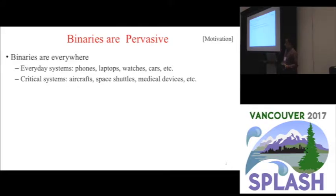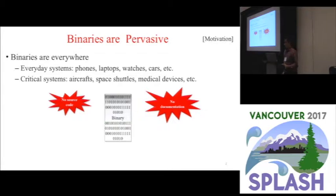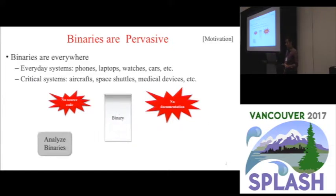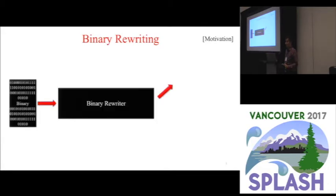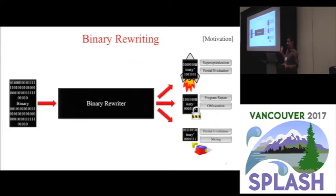The task of machine code synthesis falls in the broader category of binary analysis. Binaries are of course pervasive, and sometimes we lack source code for them and documentation. Our binaries might be legacy, or they might be untrusted, motivating the need for automated tools to analyze and potentially rewrite them. Why rewrite binaries? There are a lot of applications for a binary rewriter. We might rewrite binaries to optimize them either by super optimization or partial evaluation. If we have interest in security for program repair or obfuscation, or to extract an executable component like a program slice.